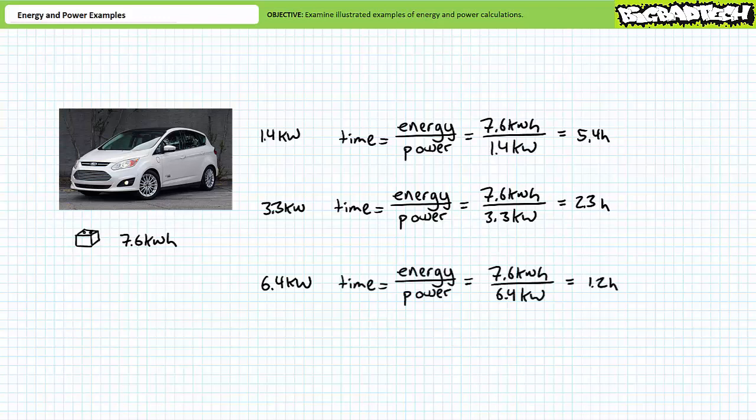Finally, let's examine the 6.4 kilowatt rated commercial fast charger. Notice how the less powerful 1.4 kilowatt charger takes much longer to fill the same battery bank than does the more powerful 6.4 kilowatt charger. It makes sense — power is the rate of energy transfer. A more powerful charger delivers more energy per unit time and as a result, the battery is filled to capacity much quicker.